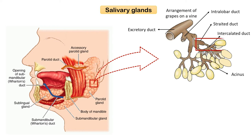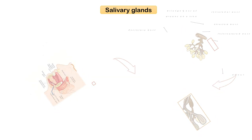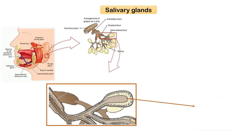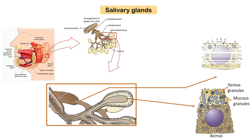The acinus is a blind sac composed of secretory cells. The term 'acinus' means berry or grape in Latin, referring to the secretory unit of the salivary glands. Acini contain serous cells, which produce serous secretion high in protein, and mucus cells, which produce mucus secretion high in mucin. Intralobular ducts are of two types: intercalated ducts and striated ducts (also termed secretory ducts). Intercalated duct cells contain a few secretory granules, rough endoplasmic reticulum, mitochondria, and a round or oval centrally placed nucleus.